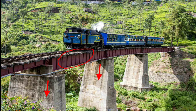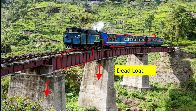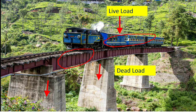The weight of the bridge is constantly applied on to the pillars of the bridge, so this type of load is called dead load. Suppose a train is moving onto the bridge — the weight of the train acting on the bridge is an example of live load. This is a temporary load: once the train arrives the load is applied, and once the train moves away the load is released. So these are the two types of load: dead load and live load.